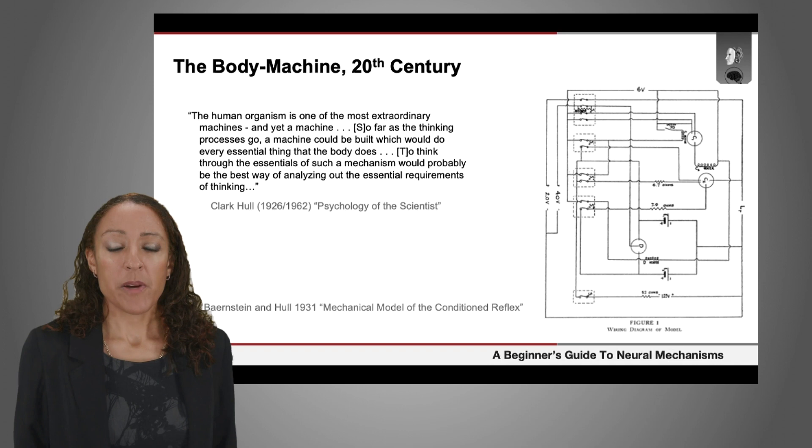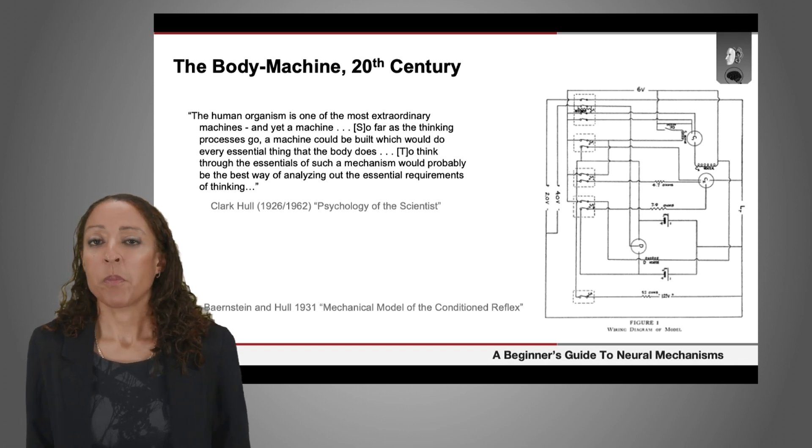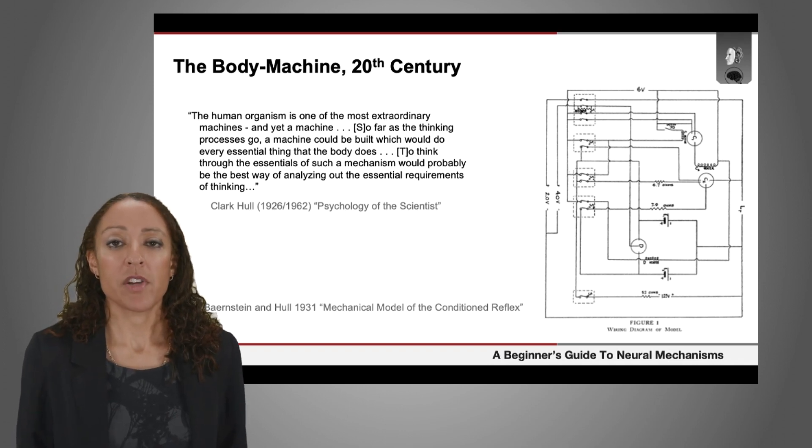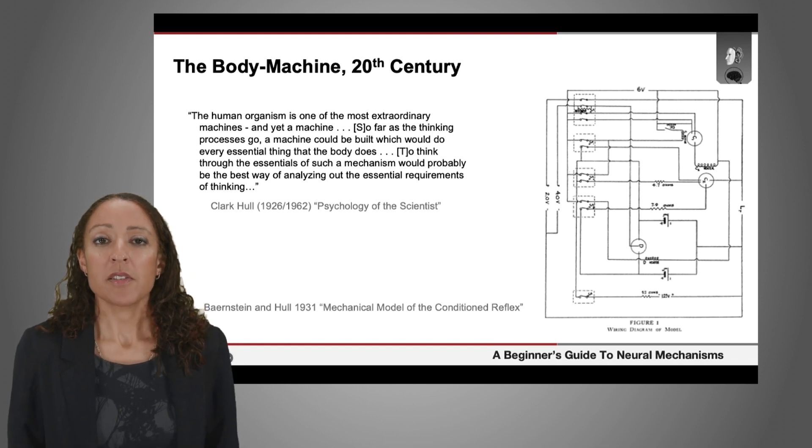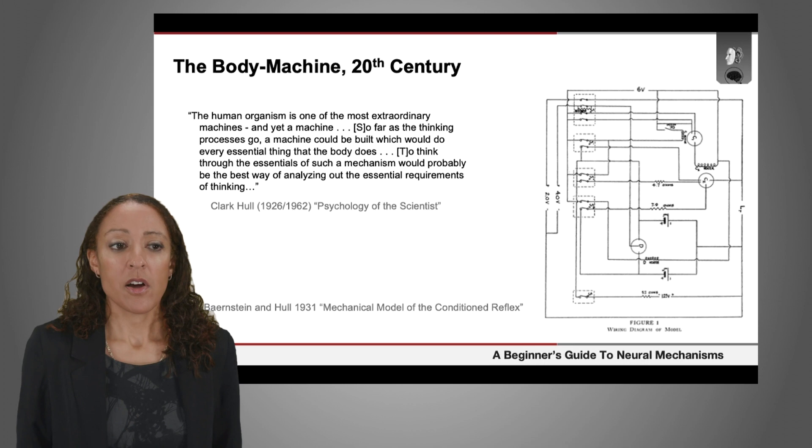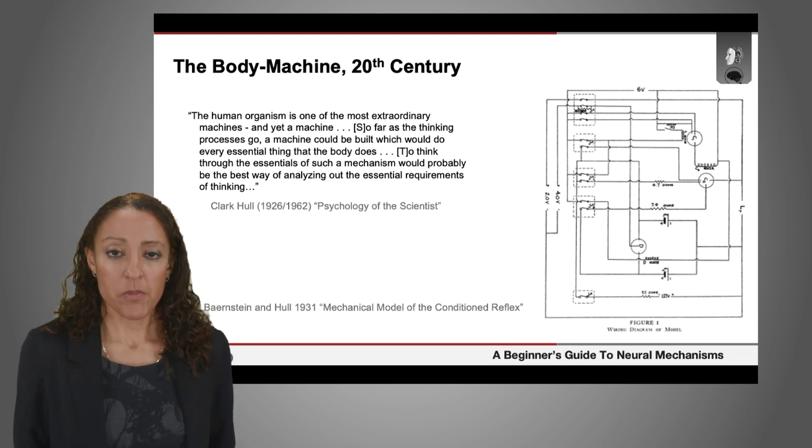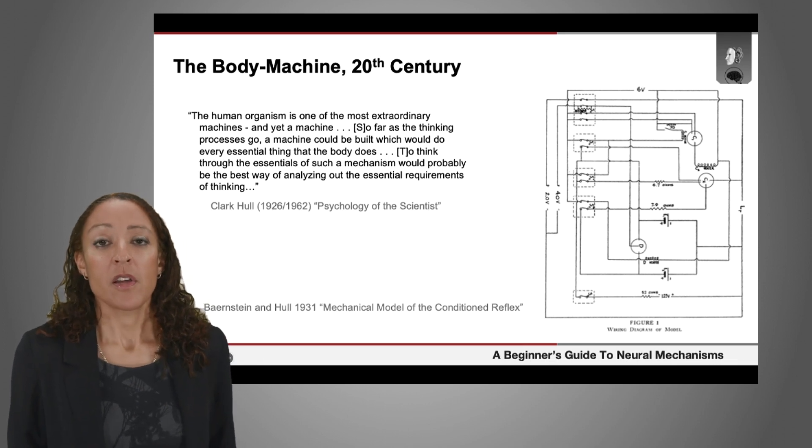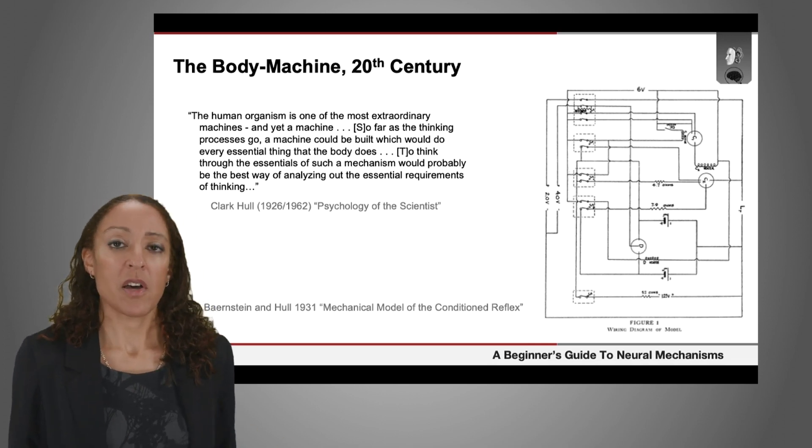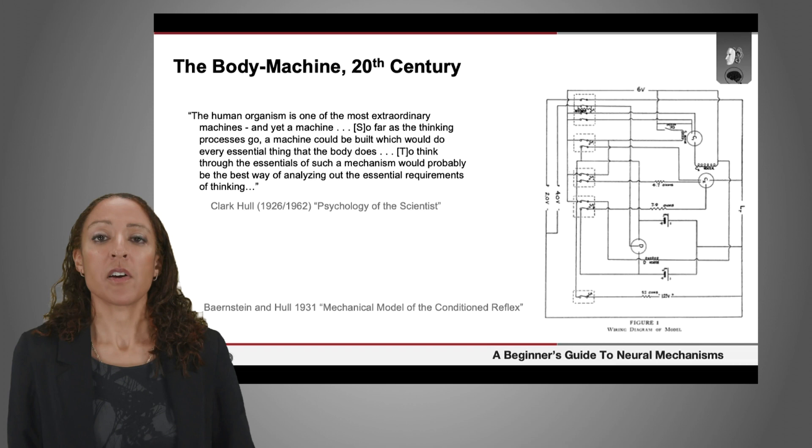When you get to the 20th century, when the sciences of the mind and brain are really taking the shape that we know them today, this idea of the body being a machine becomes all the more important. By this stage, psychologists like Clark Hull are not thinking that we have a rational soul or anything separate from the physical substance of our body. He's saying that in order to understand how humans think, you need to uncover the mechanisms that are there in our brains and our nervous systems.